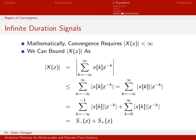Now let's talk about infinite duration signals. We need the magnitude of X of Z to be less than infinity for Z to be in the region of convergence. Writing out the Z-transform as the sum from minus infinity to infinity of X of K times Z to the minus K and taking the magnitude, I use the triangle inequality — the magnitude of a sum is always less than or equal to the sum of magnitudes.